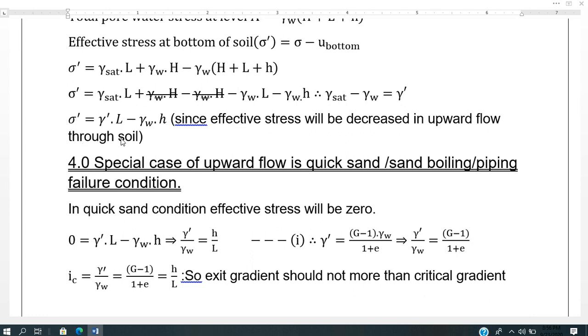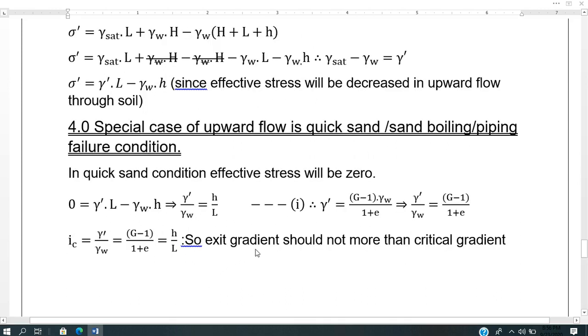In quick sand condition, effective stress is zero. Gamma submerged times L minus gamma W times h equals zero. So gamma submerged by gamma W equals h by L. We know gamma submerged by gamma W equals G minus 1 by 1 plus e, which is called the critical gradient. The exit gradient should not be more than the critical gradient in dams.